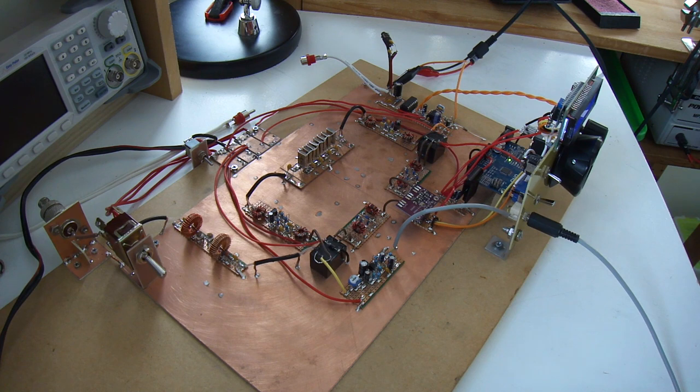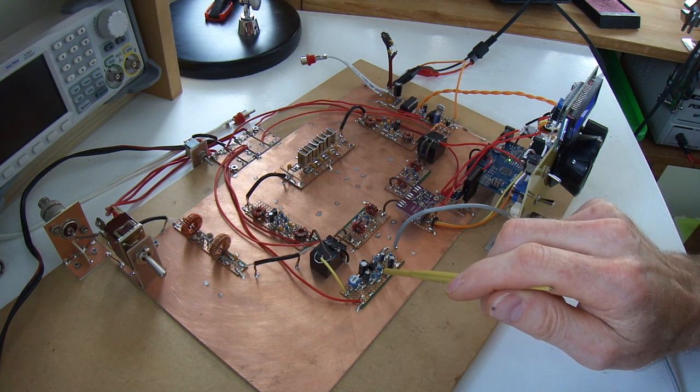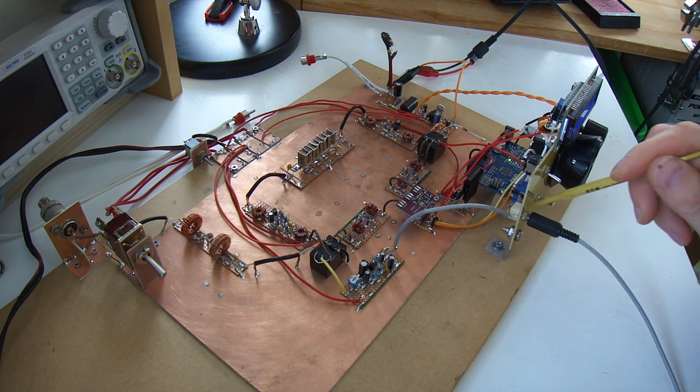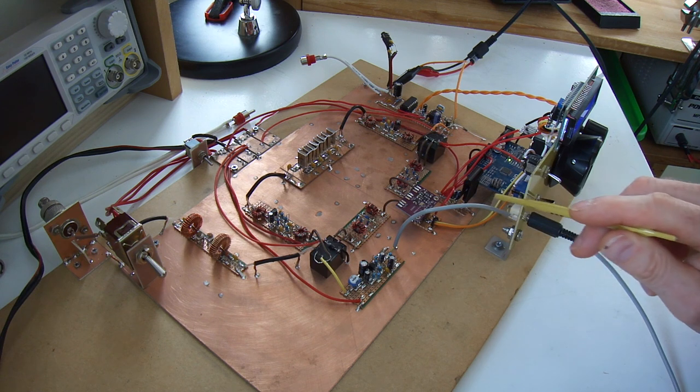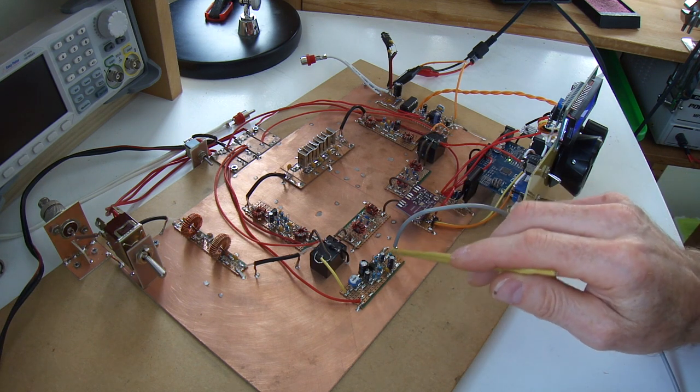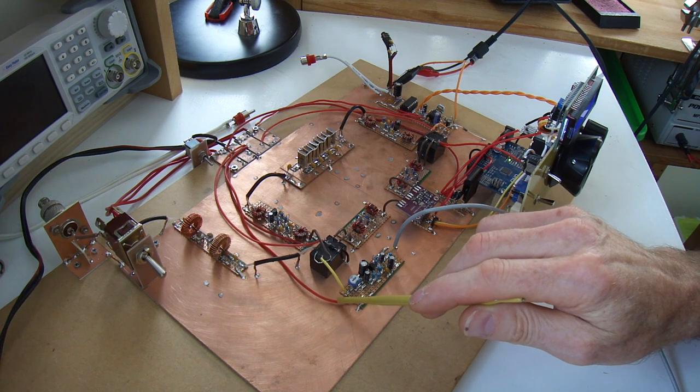OK, so we've got the audio microphone amplifier in the circuit. It's connected up to our front panel microphone socket, so that's providing both the DC bias and the audio coming back. That's being amplified, it's receiving 12 volts transmit.